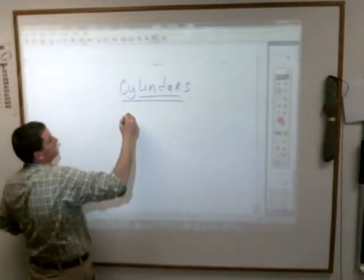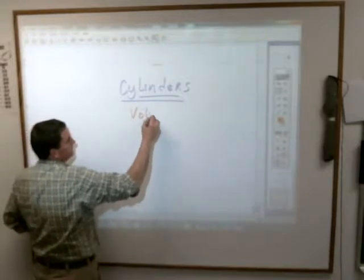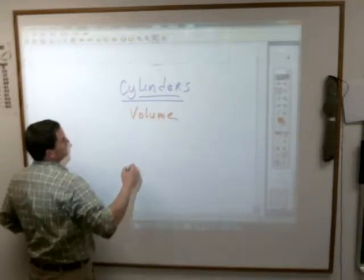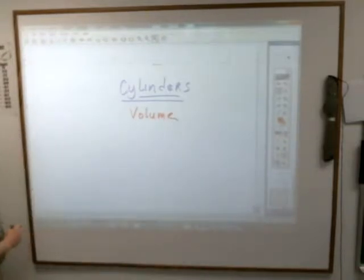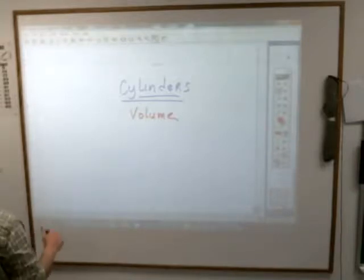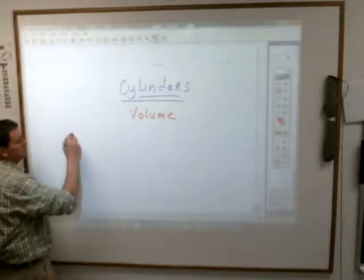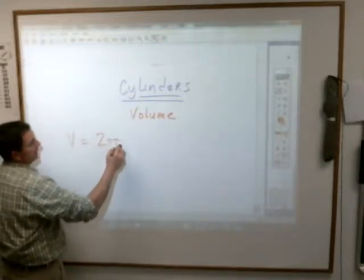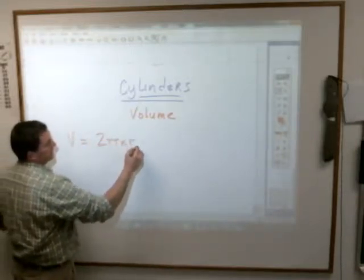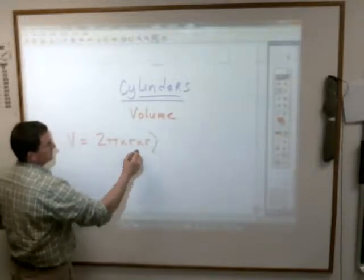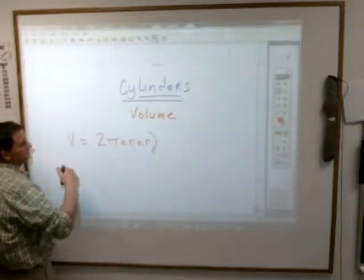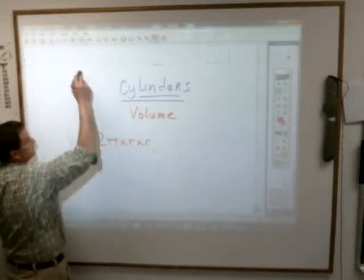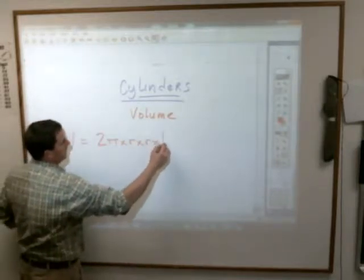That area is the volume of the cylinder. Please write this out. The volume of a cylinder equals 2 times pi, times radius, times radius. Oh, I guess it doesn't matter. Times the height.